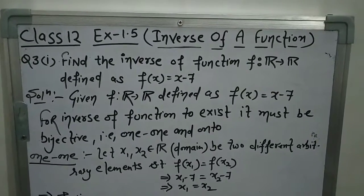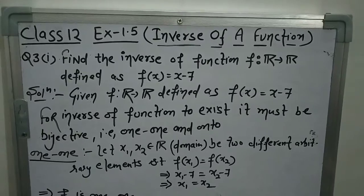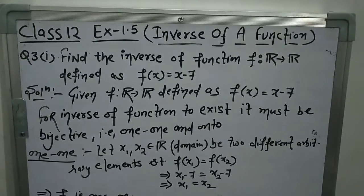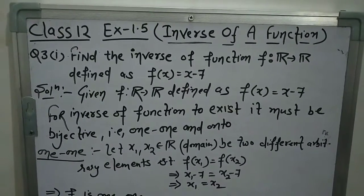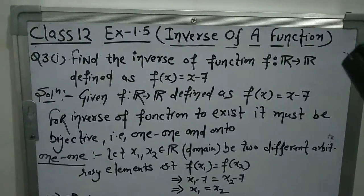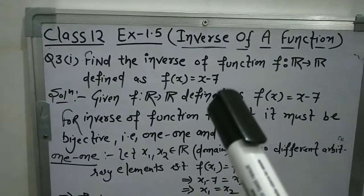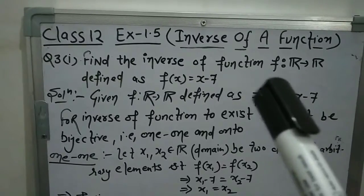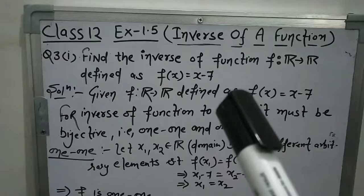Hello students. In the previous lecture we did the theorems and definitions of inverse of a function. Today we will do some questions based on inverse of a function. The first question we will do is question number 3, part one: Find the inverse of function f from R to R defined as f(x) = x - 7.